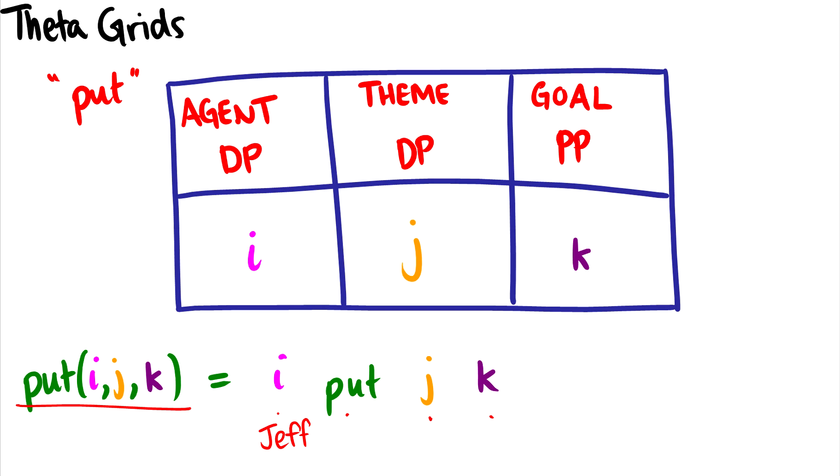And then the j argument, the second thing it takes is a theme determiner phrase. So Jeff put the book. Okay, that's a good theme, is the thing being put somewhere. And then the third argument it takes is a goal prepositional phrase. So Jeff put the book maybe on the shelf. That's a pretty good prepositional phrase, which is also a goal. So we can see that this verb put, with this theta grid, constructs proper sentences.